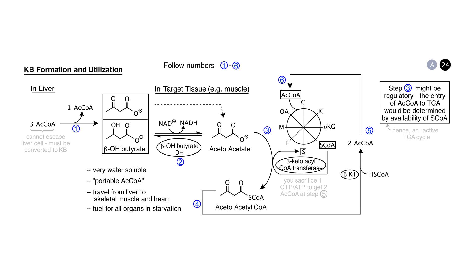We now have to put a thioester group on the acetoacetate. In step three, succinyl-CoA from the TCA cycle donates its coenzyme A to acetoacetate, forming acetoacetyl-CoA in the mitochondrion. At step four, acetoacetyl-CoA is converted by beta-ketothiolase into two molecules of acetyl-CoA, requiring another CoA group. Beta-ketothiolase does the same chemistry here as in beta-oxidation — splitting acetoacetyl-CoA into two acetyl-CoA molecules. In steps five and six, those molecules enter the TCA cycle, where they are oxidized to carbon dioxide with the generation of energy.